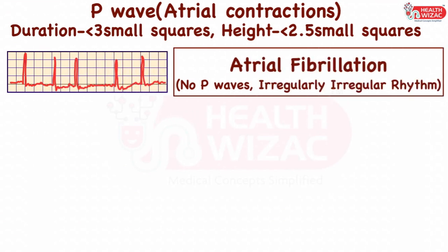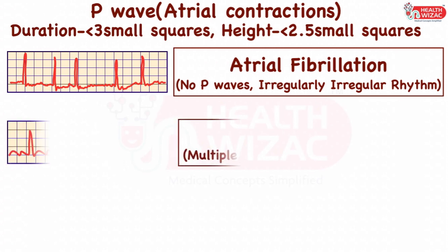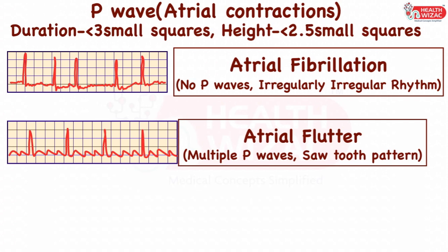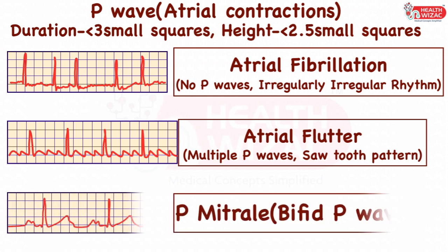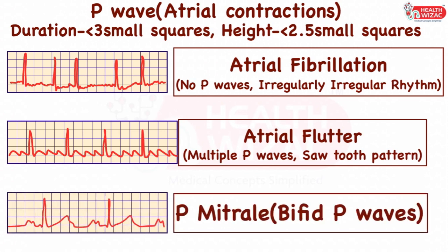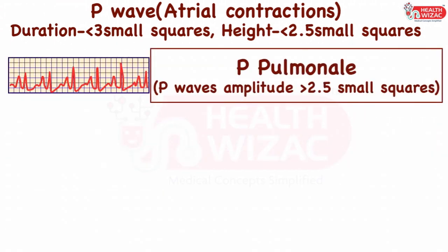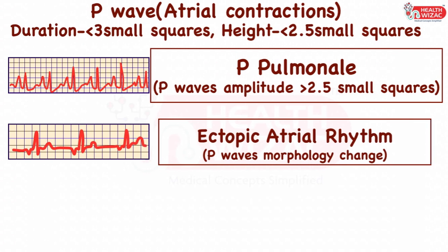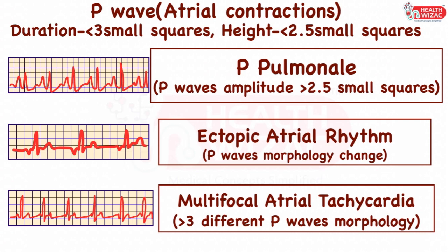If P waves are absent and rhythm is irregularly irregular, ECG is labeled as atrial fibrillation. If multiple P waves are present before each QRS complex giving a saw-tooth like pattern, it is labeled as atrial flutter. If P waves are bifid, it is labeled as P mitrale. If P wave magnitude is more than 2.5 small squares, it is called P pulmonale. If P waves are present but morphologically different, ECG is labeled as ectopic atrial rhythm. If more than three different P wave morphologies are present, it is labeled as multifocal atrial tachycardia.